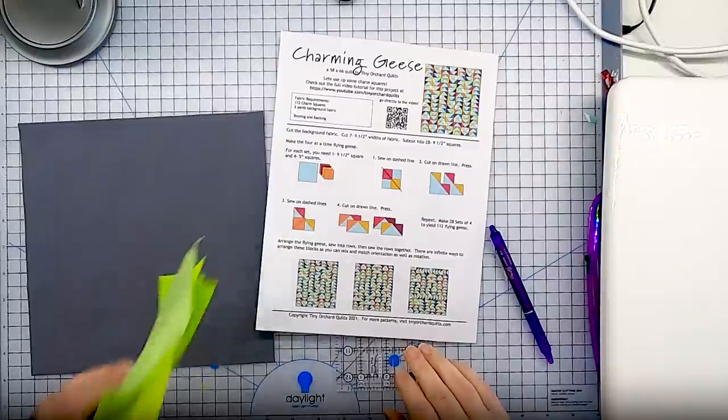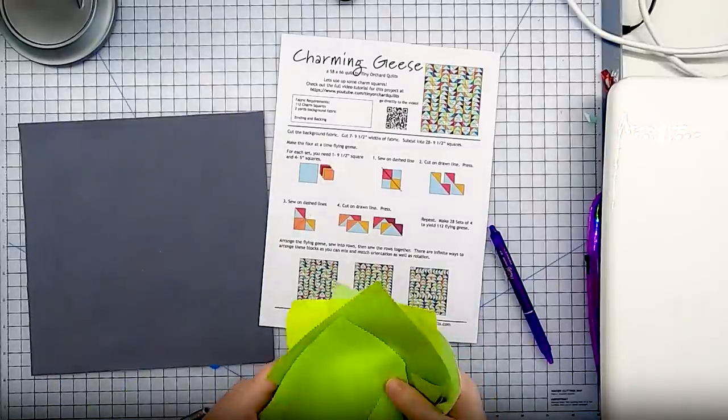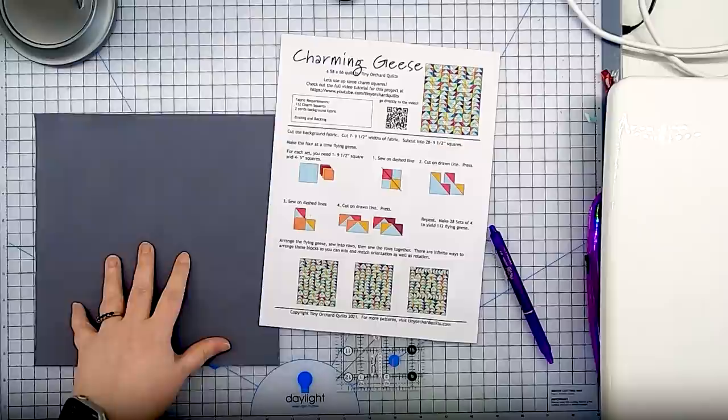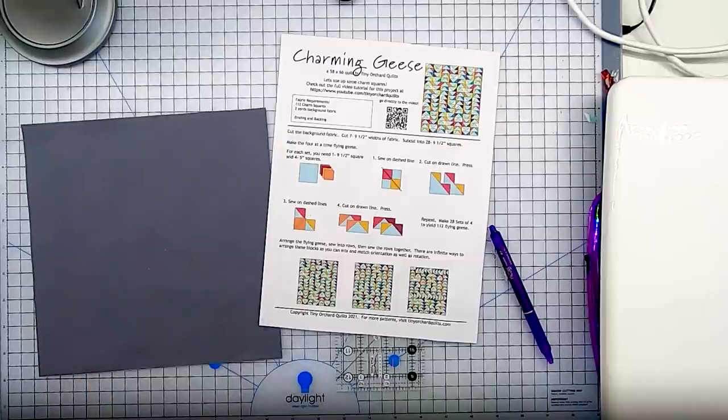So now that you know how to customize your squares to whatever scrap sizes you have, we're going to return to the pattern which uses five inch charm squares as small squares. I have already cut my large square down to nine and a half inches so we are ready to go.